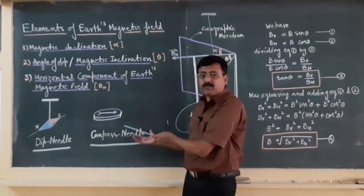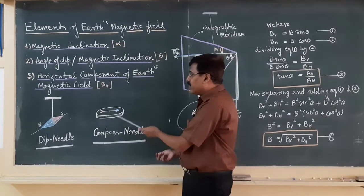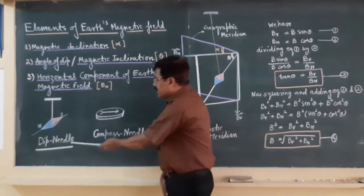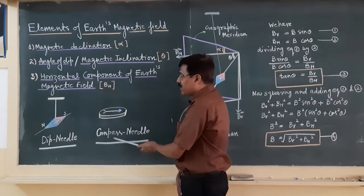Similarly, the compass needle. Very simple, already you know this is rotating in horizontal plane. So the basic difference between dip needle and compass needle is this.